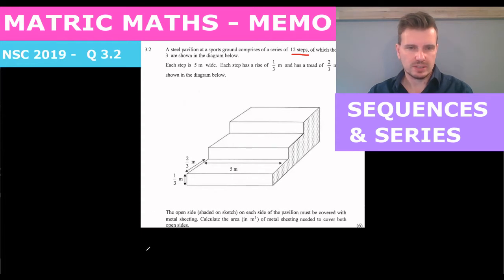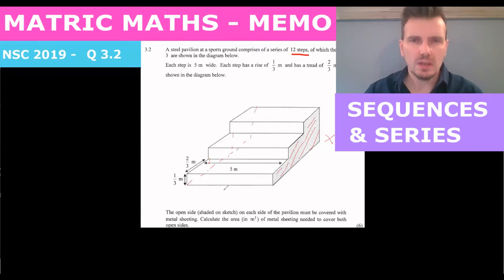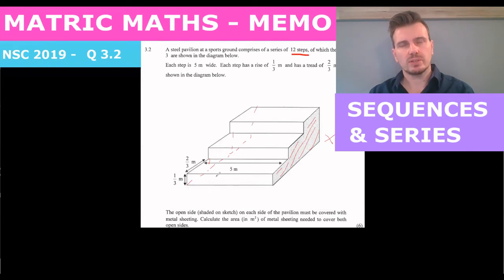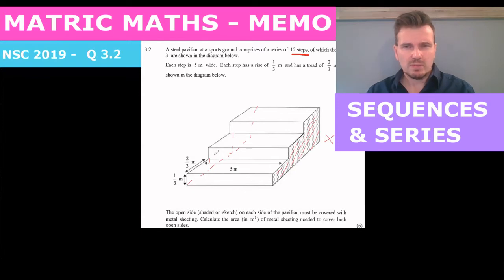So they want us to calculate this area here. And remember we're going to have to multiply it by two at the end, because we've got both sides — so it will also have to include this side here. We are in question three, and we always know that questions two and three are usually sequences and series questions, especially because we had a sigma notation in 3.1. So we are probably going to look at the sum of a series. Let's try and break this up into manageable sections that we can find the area of.